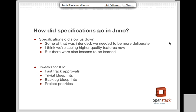We also have a trivial blueprint process. In Kilo, not absolutely everything has to have a full specification. If it's something really simple — like adding a flag that changes the location of a temporary directory — that wouldn't require a specification. You'd write up a several-sentence blueprint on Launchpad and bring it to one of our weekly Nova meetings, where you get to advocate for it being trivial. We either agree or don't, and if we do agree, we just approve it on the spot. So that's unblocked a lot of the smaller changes as well.